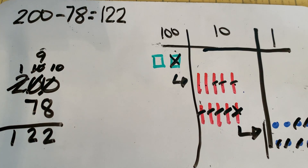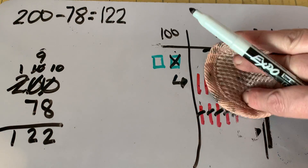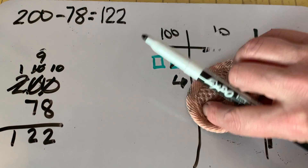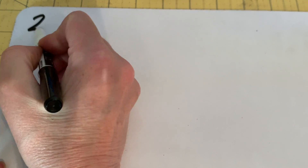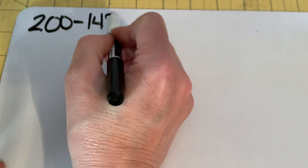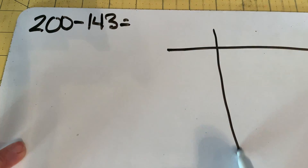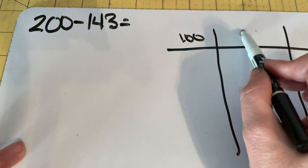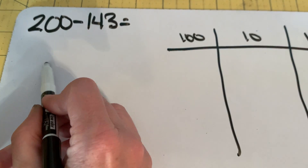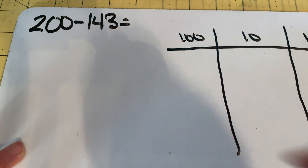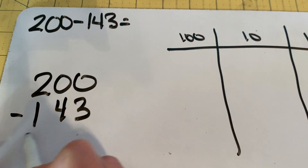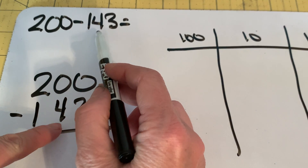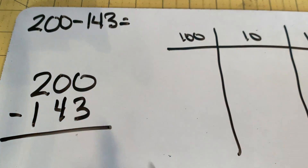What if we were to subtract a number from two hundred that has a hundred in it? What would that do for us? Let's look at it. We're still going to have the same place value chart with hundreds, tens, and ones. We're lining up all the numbers because we have one hundred, four tens, and three ones that we're going to take away from our big number of two hundred.